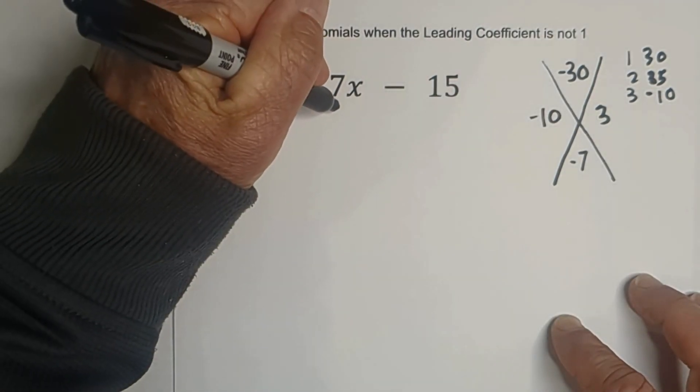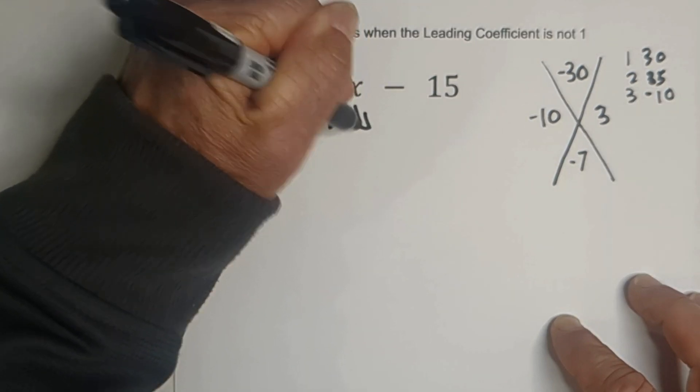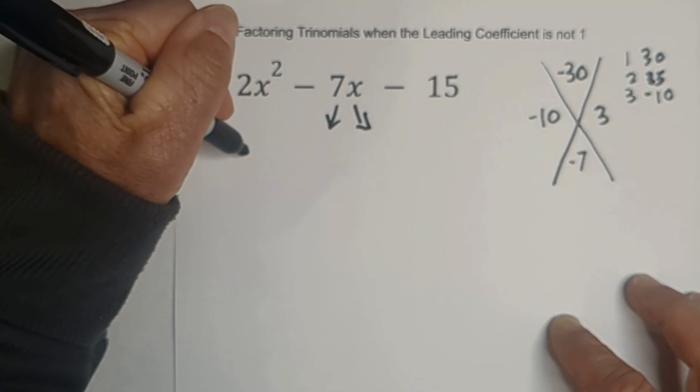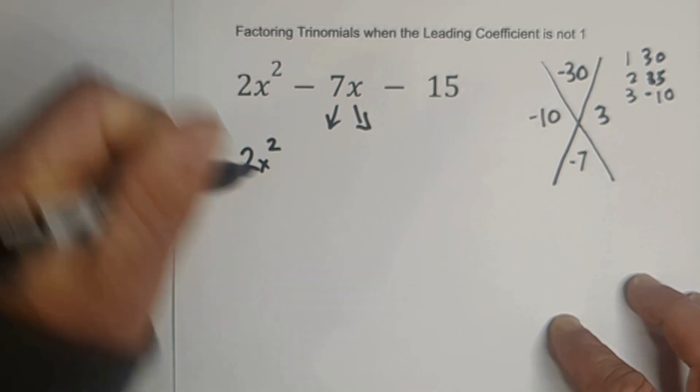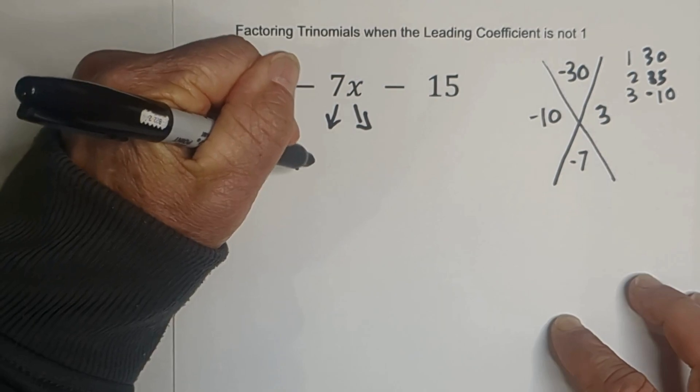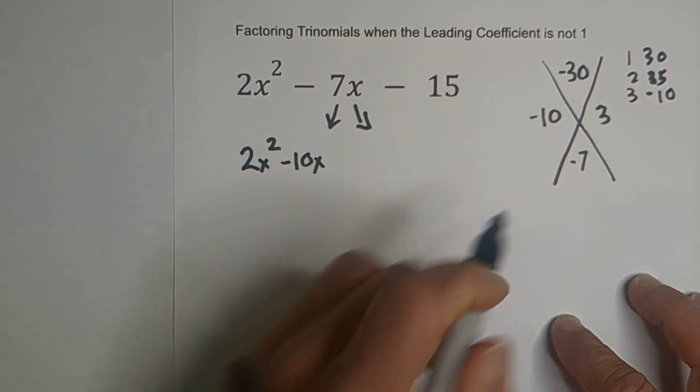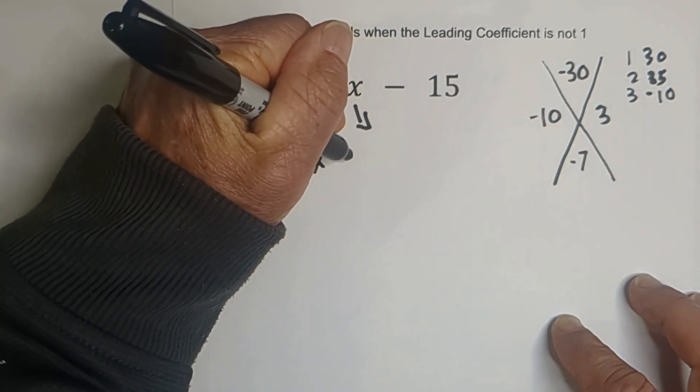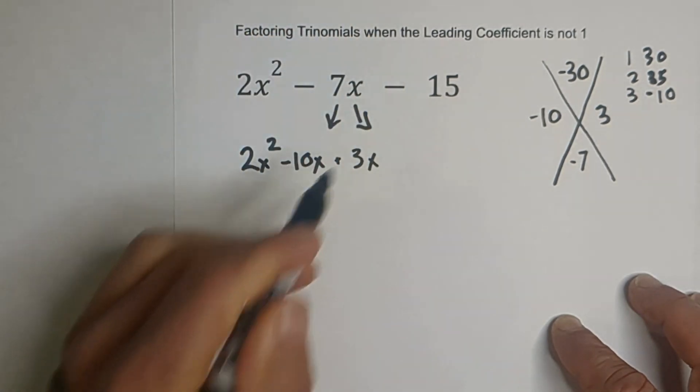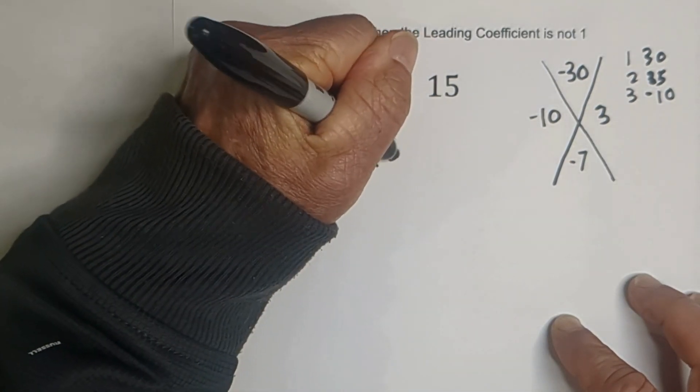So next, what we're going to do is we're basically going to split this middle term. So we're just going to rewrite this 2x squared. And then we're going to bring this first term over here, negative 10x. And then for the next term, we're just going to go plus 3x and bring down the last term.